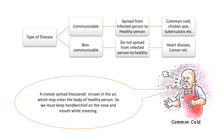If we discuss the types of disease in humans, there are two broad categories. The first is communicable diseases, which spread from an infected person to a healthy person. The other is non-communicable, which do not spread. Common cold, chickenpox, and tuberculosis are examples of communicable diseases. Heart disease and cancer are examples of non-communicable diseases.